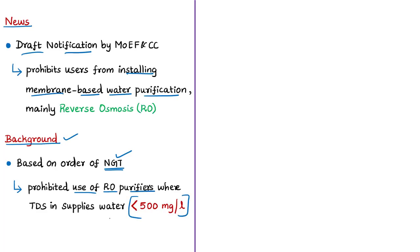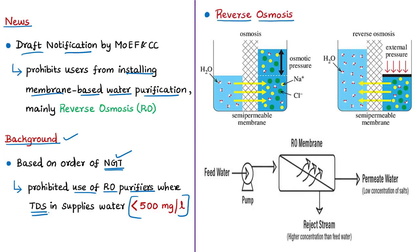TDS refers to total dissolved solids. In normal osmosis, water diffuses through a semi-permeable membrane that blocks dissolved solutes — water is the solvent and pollutants are the solutes. Water moves from a low salt concentration region to a high salt concentration region, driven by the difference in concentration, until salt concentration equalizes on both sides. This happens under natural conditions.